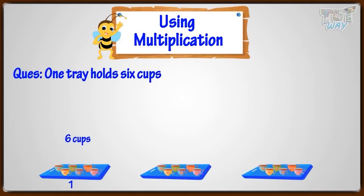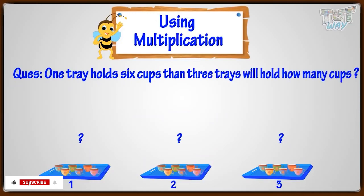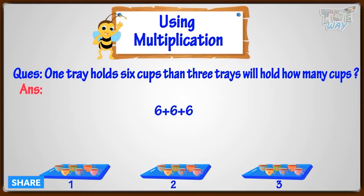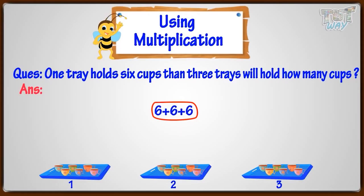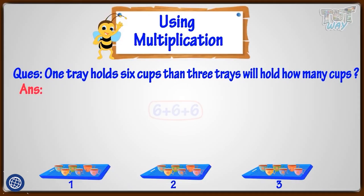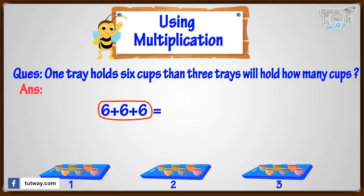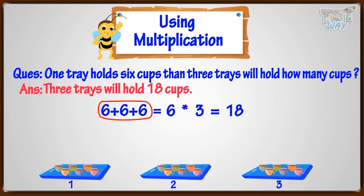One tray holds six cups, then three trays will hold how many cups? You need to add six three times. You now know you can write repeated addition in the form of a multiplication sentence, so adding six three times can be written as six times three, and six multiplied with three is eighteen.